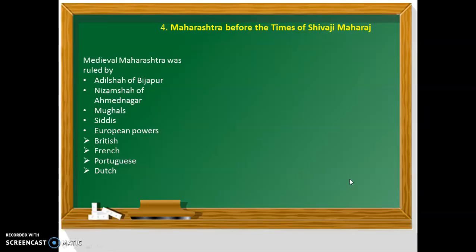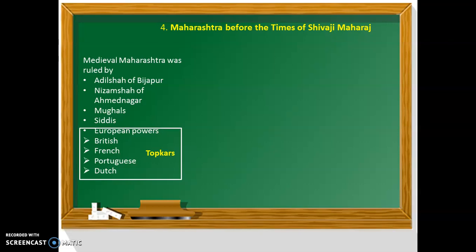Let us revise what we learned. Maharashtra in the 17th century common era was ruled by the Adil Shah of Bijapur, the Nizam Shah of Ahmadnagar, the Mughals, the Siddhis, and European powers such as the British, the French, the Portuguese, and the Dutch. All these European powers were called as Topkars. We also saw that a Mauja was a small village, a Kasbah was a slightly bigger village, and the Kasbah was the headquarters of the Pargana.